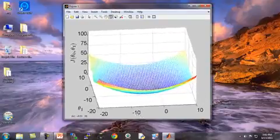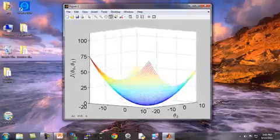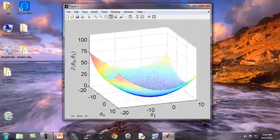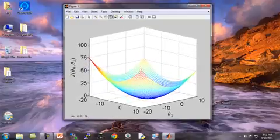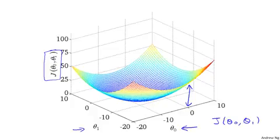Let me show you the same plot in 3D. So here's the same figure in 3D with axes theta 0, theta 1, and vertical axis j of theta 0, theta 1. And if I rotate this plot around, you kind of get a sense of this sort of bow shaped surface. That's what the cost function j looks like.